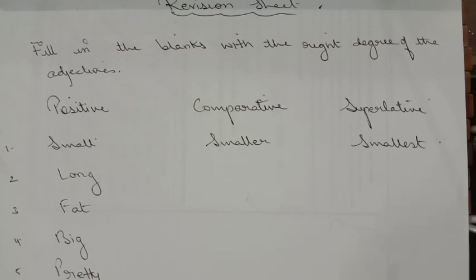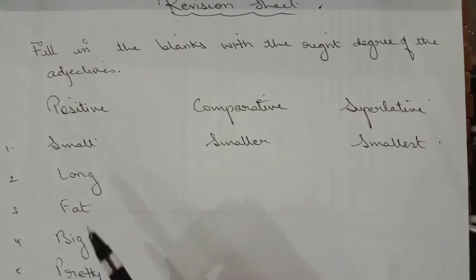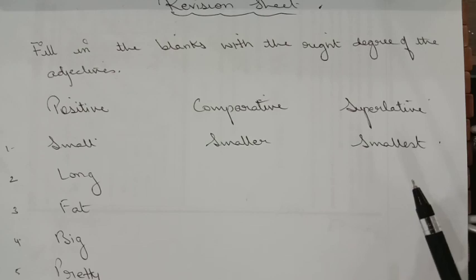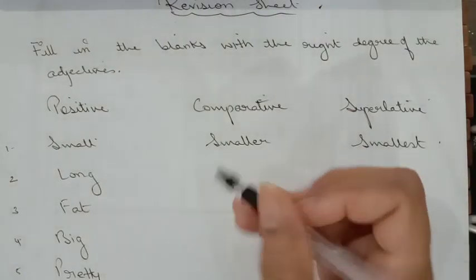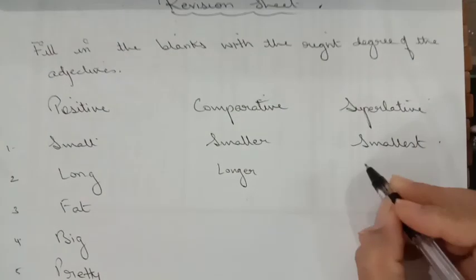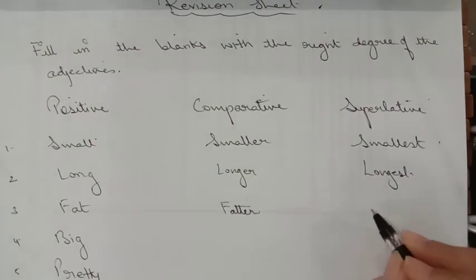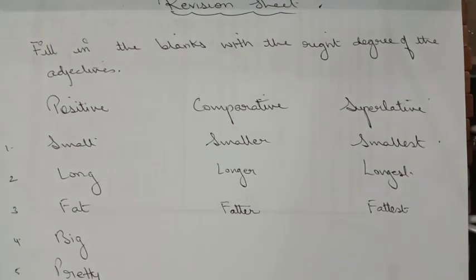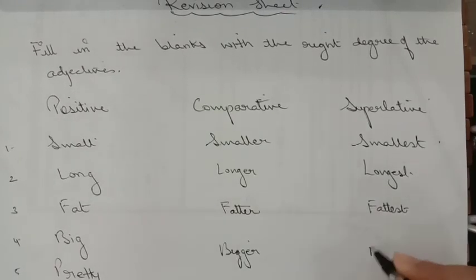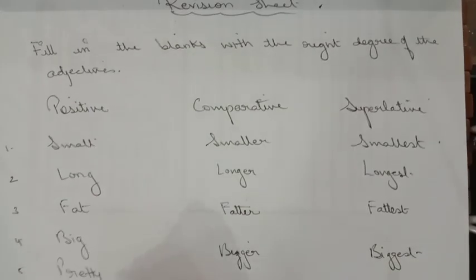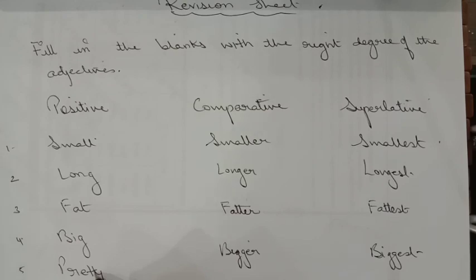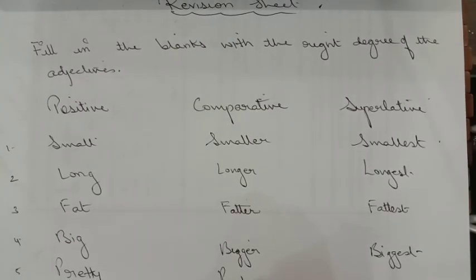Now let's do the revision sheet — fill in the blanks with the right degree of adjectives. The positive is given; write the comparative and superlative. 'Small' — 'smaller' — 'smallest'. 'Long' — 'longer' — 'longest'. 'Fat' — one syllable word — 'fatter' — 'fattest'. 'Big' — 'bigger' — 'biggest'. 'Pretty' — ending with Y preceded by a consonant — change Y to I — 'prettier' — 'prettiest'.